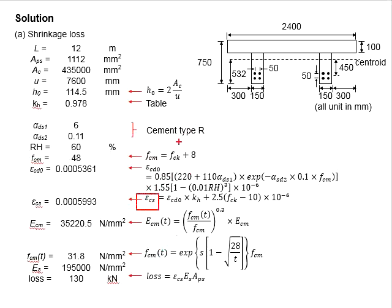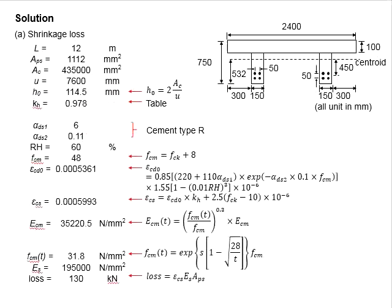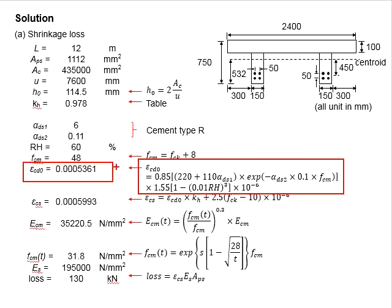For you to determine the epsilon_cs, the equation here requires the relative humidity, which is given as 60 percent. In this equation you need to determine the factor alpha_ds1 and alpha_ds2. It is given that the cement type R is being used. Referring to the table here, cement type R will have alpha_ds1 equals to 6 and alpha_ds2 equals to 0.11. Substitute the relevant value into the equation here, you get epsilon_cd naught.